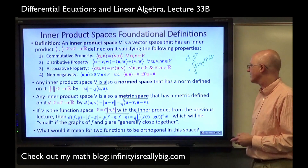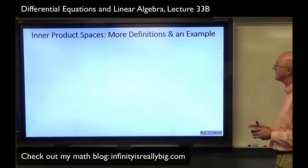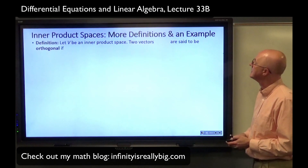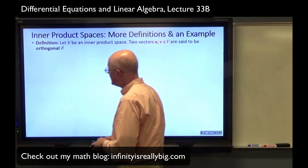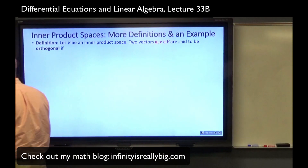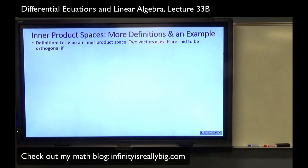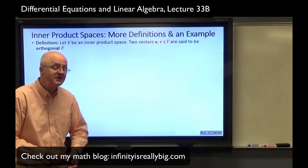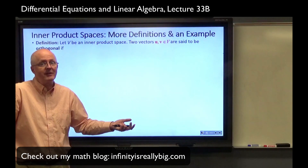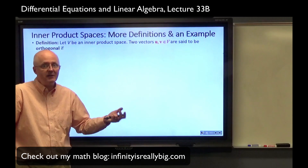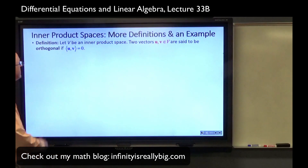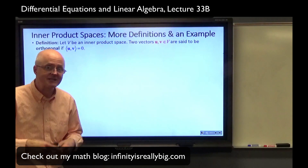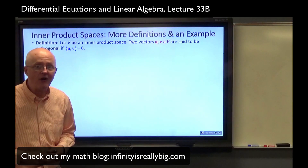What would it mean for two functions to be orthogonal? Here's a definition of orthogonal in an inner product space. Two vectors U and V in capital V are said to be orthogonal — generalizing the dot product definition, which was U dot V equals zero, now it's the inner product of U and V being zero. This does apply to dot products — dot products are inner products, by the way.